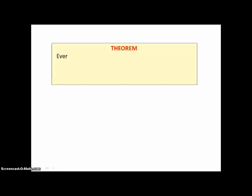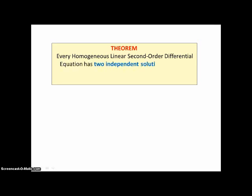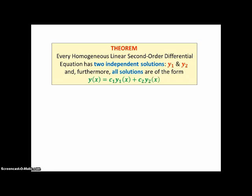A second theorem states that every homogeneous linear second-order differential equation has exactly two independent solutions y₁ and y₂, and furthermore all solutions are of the form y(x) = c₁y₁ + c₂y₂. The first theorem said this linear combination would be a solution; this theorem says there will be exactly two independent solutions, and this linear combination covers all possible solutions. The proof of this is beyond the scope of this course.